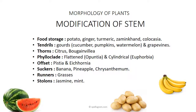These are the different types of modification — you can see them listed down: food storage, tendrils, offset, suckers, tolerance, and all of this. These are the different types and their examples are also listed here. This is the section that we are going to focus on and we are going to make a trick to study this section.